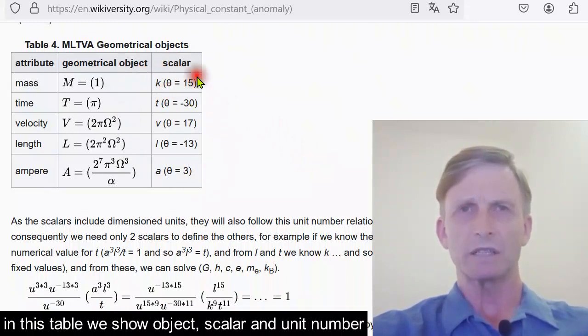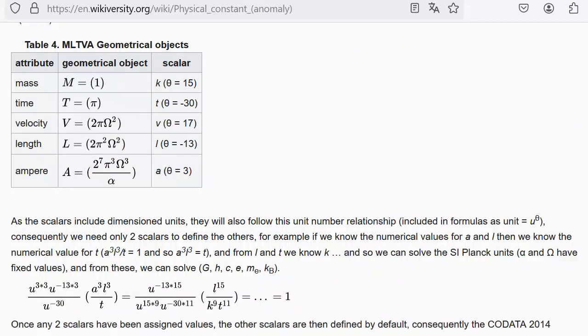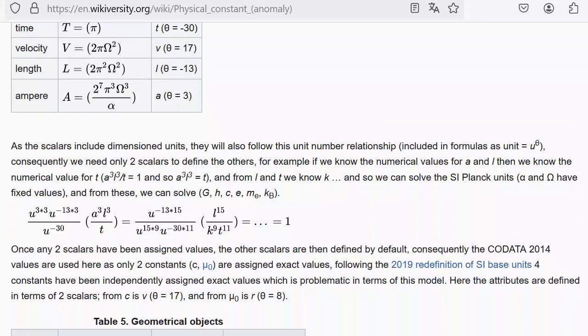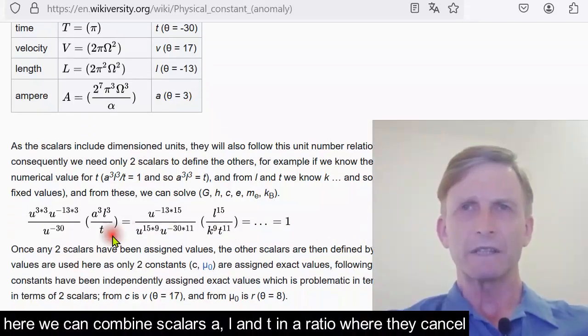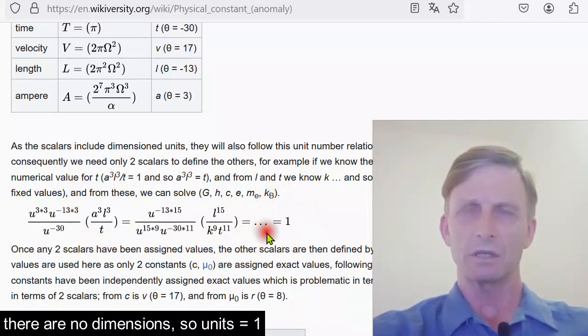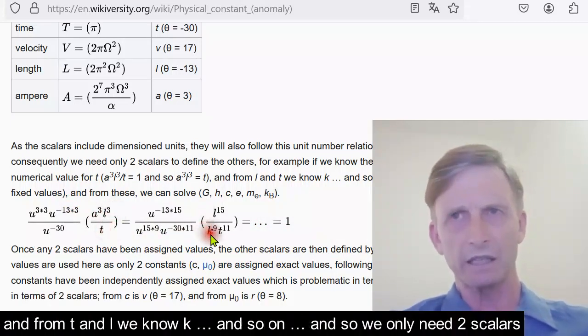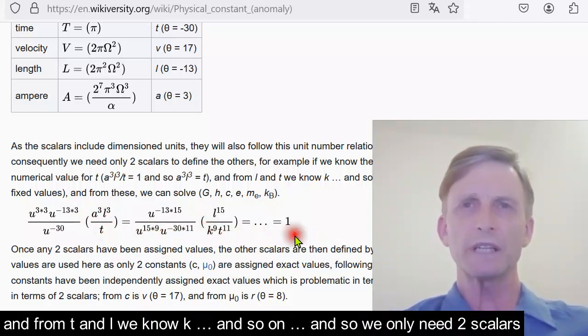Because the scalars carry the units, we can assign to the scalars these unit numbers. In this table, we show object, scalar, and unit number. This is where it becomes interesting, because we can now find combinations where the scalars cancel. Here we combine scalars alpha, A, L, and T in a ratio where they cancel. There are no dimensions, so units equals one. This means that if we know the values for scalars A and L, then we know the value for scalar T. And from T and L we know K, and so on. So we only need two scalars.